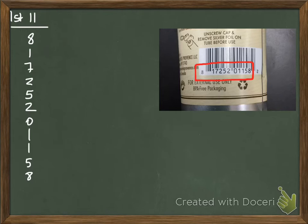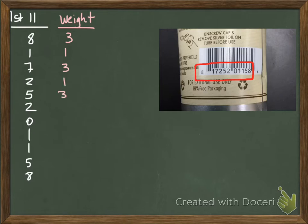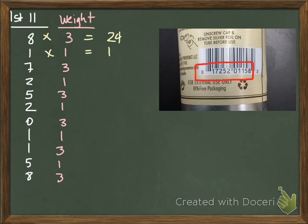Now the system uses weights — and this is clever. The weights alternate: 3-1-3-1-3-1 repeating all the way down. I put a 3, then 1, then 3, then 1, and so on next to each digit. Then I multiply each digit by its weight: 8×3=24, 1×1=1, 7×3=21, 2×1=2, 5×3=15, 2×1=2, 0×3=0, 1×1=1, 1×3=3, 5×1=5, 8×3=24.